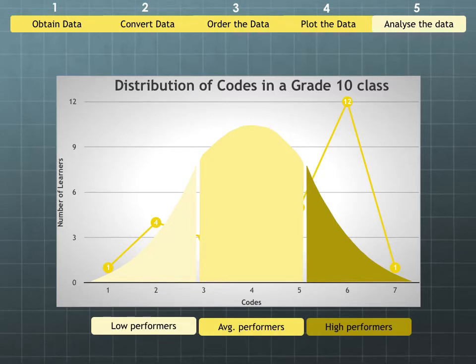If we look at the bell curve, the lowest performers should be between codes one and almost three. Your average performers are between three and five, and your high performers are between five and seven. What this bell curve says is the majority of the learners should be your average performers.